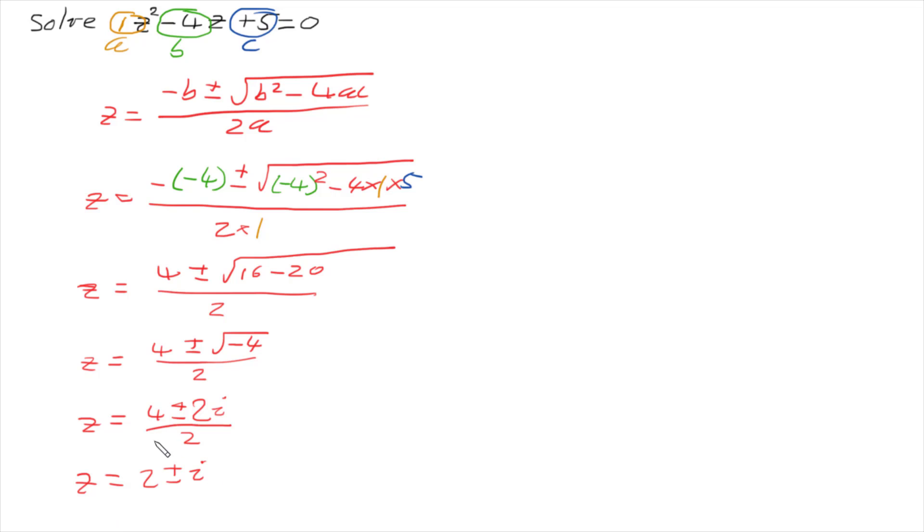So the two roots of this equation, z minus 4z plus 5 equals 0 is that z is either 2 plus i or 2 minus i.